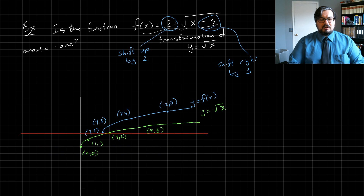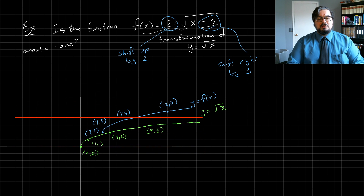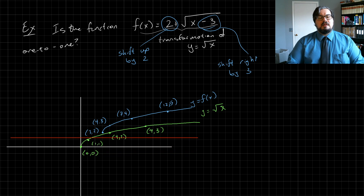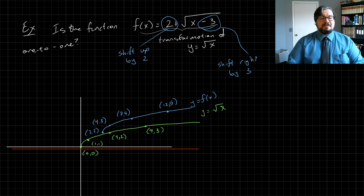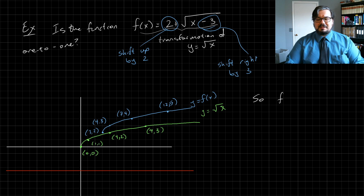Here's the graph of y = f(x) — this variation on the square root function. If we take a horizontal line and consider all positions, we see it never crosses the blue graph more than once. Sometimes it crosses 0 times, sometimes once, but never twice. Therefore this function f(x) is one-to-one.